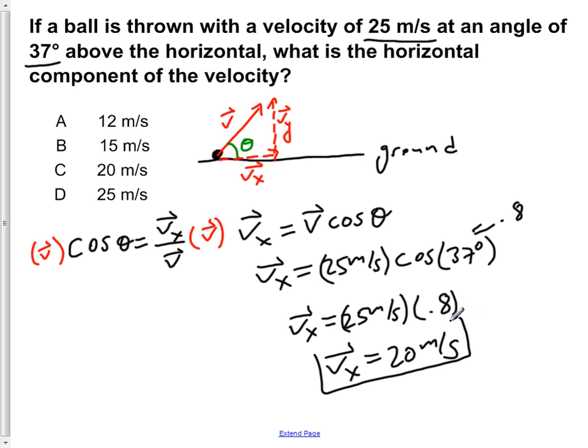So our horizontal component of velocity is 20 meters per second, which is answer C, 20 meters per second.